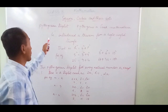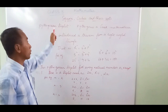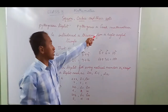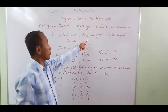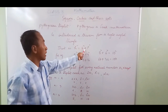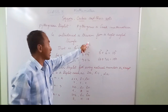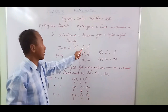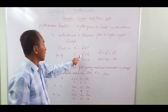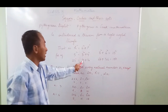The next topic is the Pythagorean triplet. Pythagoras was an ancient Greek mathematician who introduced a theorem from a right-angle triangle: hypotenuse squared equals base squared plus perpendicular squared. This gives three quantities — that is why we call it a triplet. For example, 5 squared equals 3 squared plus 4 squared, since 9 plus 16 equals 25.